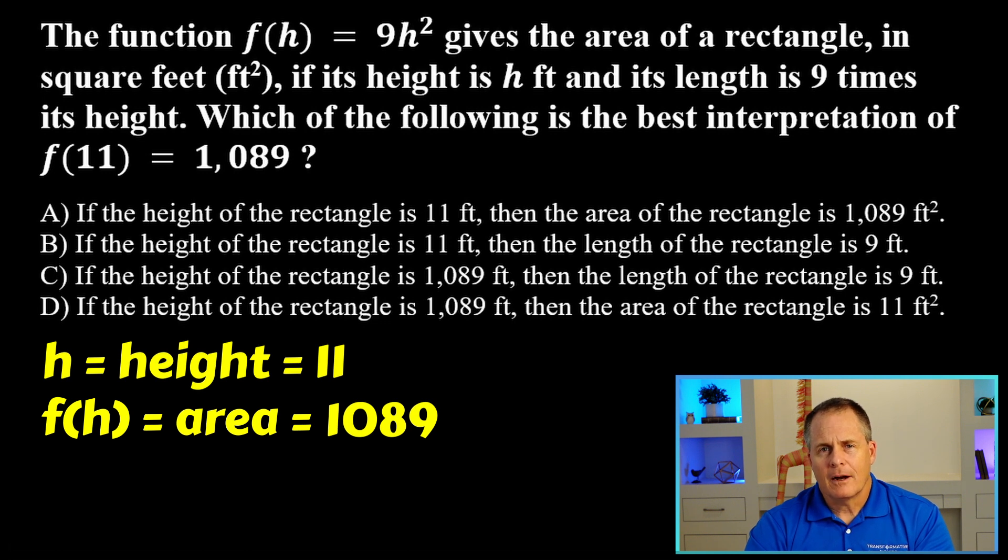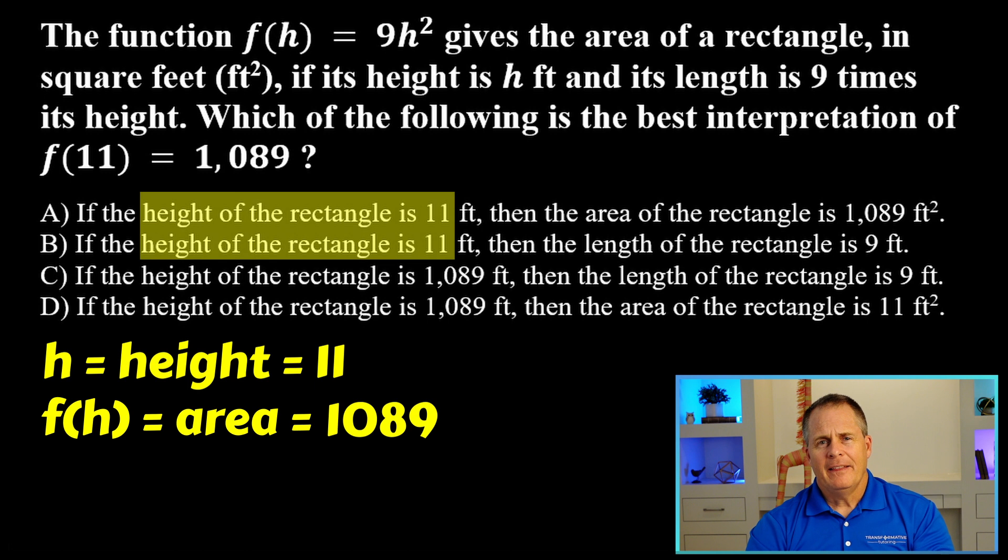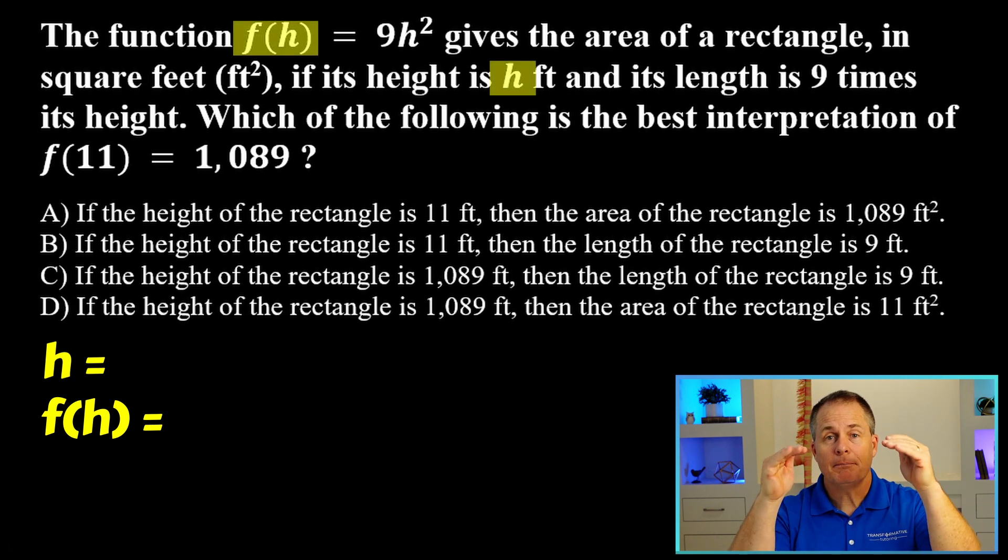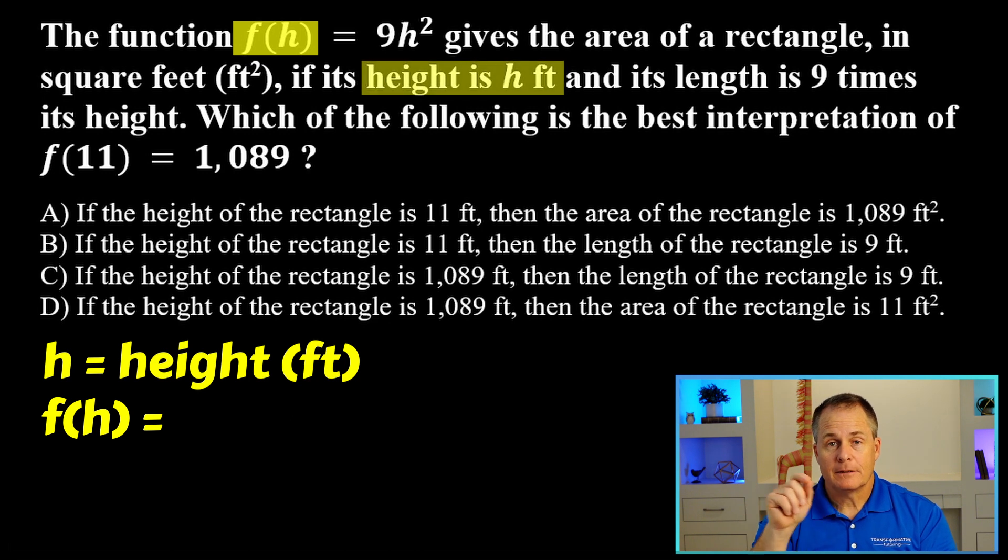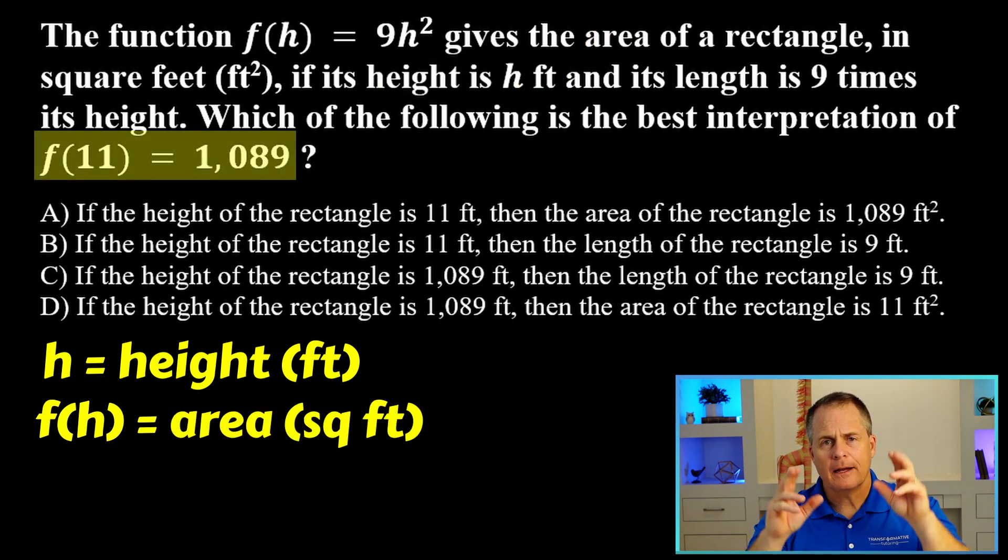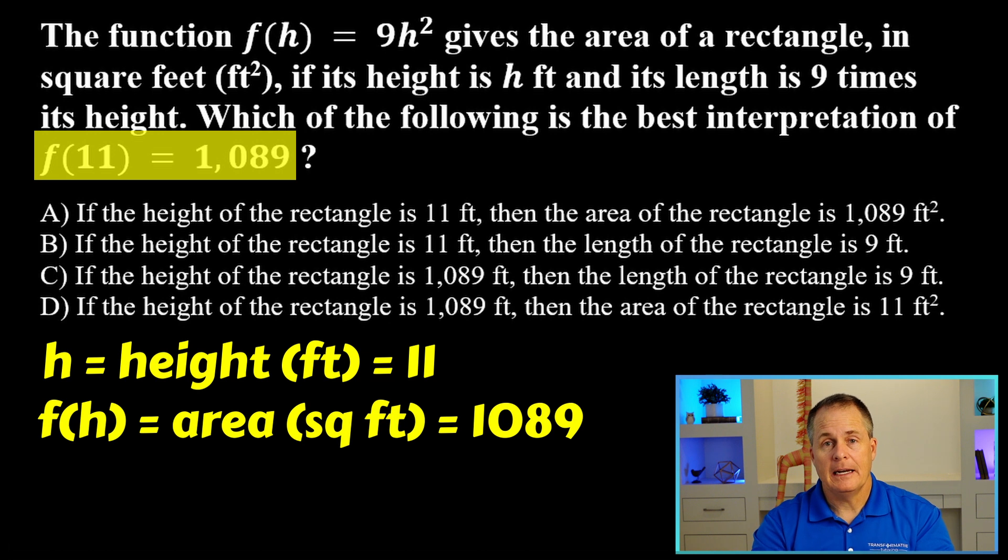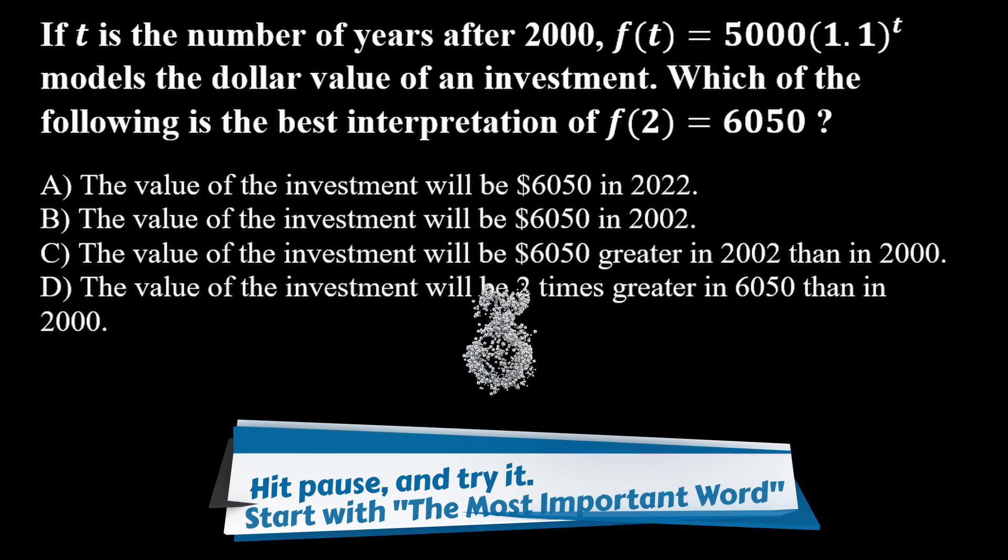And the 1,089 is kind of like the y value or the f(h) value. So as we look at our answer choices, we're looking for an answer choice that has a height of 11 and an area of 1,089. And of course, that is just choice A. So let's take a quick look back at that problem. The key is to simplify what the variables mean. And so since h was the height and f(h) was the area. As we looked at the ordered pair in disguise, we can see that 11 is the height and 1,089 is the area. Now tap pause to try problem two on your own.